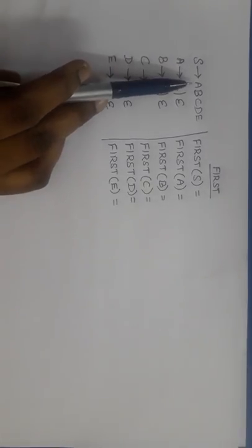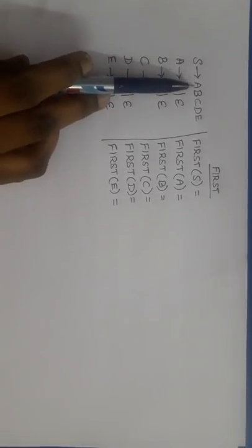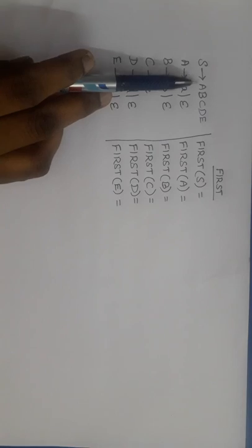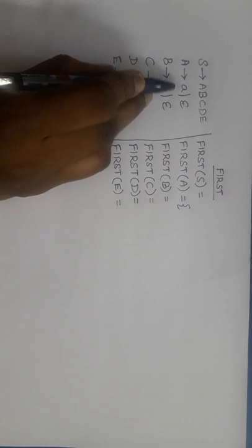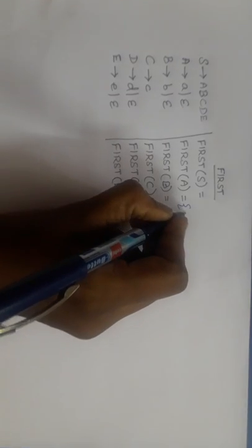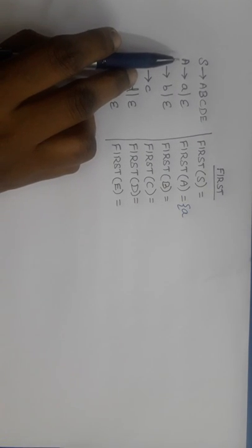FIRST of S equals FIRST of A by the third rule — since S derives A as the first symbol on the right-hand side. First we find FIRST of the individual non-terminals so it is easier to find FIRST of the start symbol. FIRST of A: consider production A → a (terminal), so FIRST of A includes terminal a. Now consider A → epsilon production — by rule 2 we add epsilon to FIRST of A.